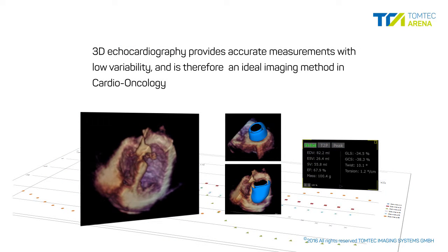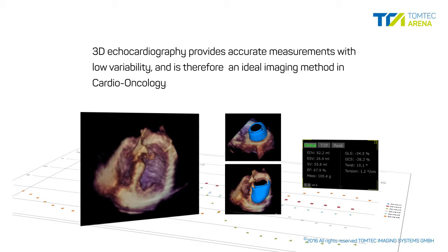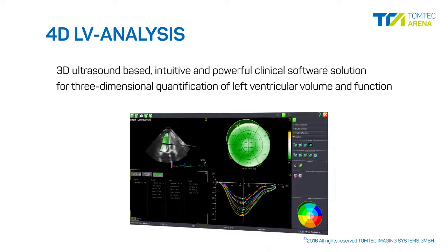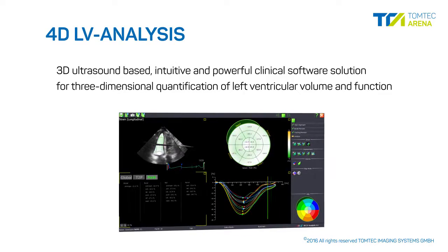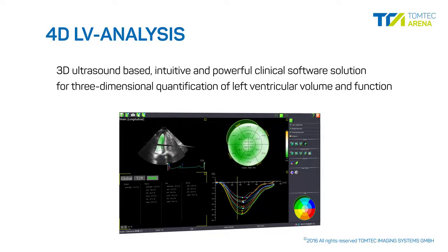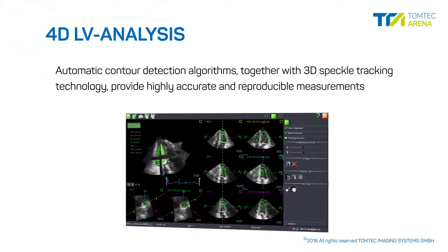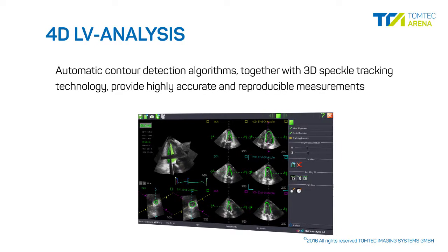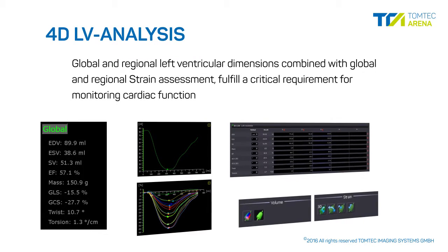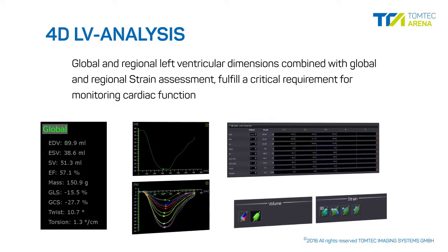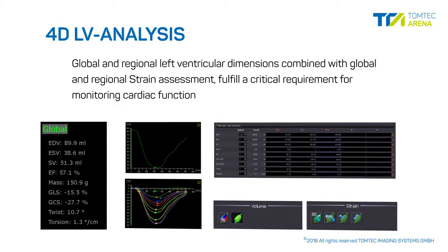3D echocardiography provides accurate measurements with low variability and is therefore an ideal imaging method in cardio-oncology. 4D LV analysis is a 3D ultrasound-based intuitive and powerful clinical software solution for three-dimensional quantification of left ventricular volume and function. Automatic contour detection algorithms, together with 3D speckle tracking technology, provide highly accurate and reproducible cardiac measurements. Global and regional left ventricular dimensions, combined with global and regional strain assessment, fulfill a critical requirement for monitoring cardiac function in cardio-oncology.